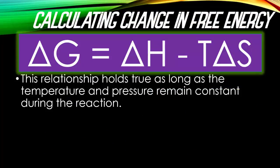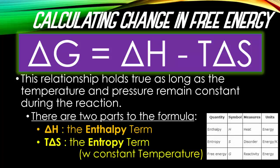The calculation for Gibbs free energy is: delta G, or the change in free energy, is equal to the change in enthalpy (the change in heat) minus temperature times the change in entropy. This relationship holds true as long as temperature and pressure remain constant. Delta H is enthalpy, T delta S is entropy. Enthalpy is heat, entropy is disorder, and G represents the reactivity or energy for making a spontaneous reaction.